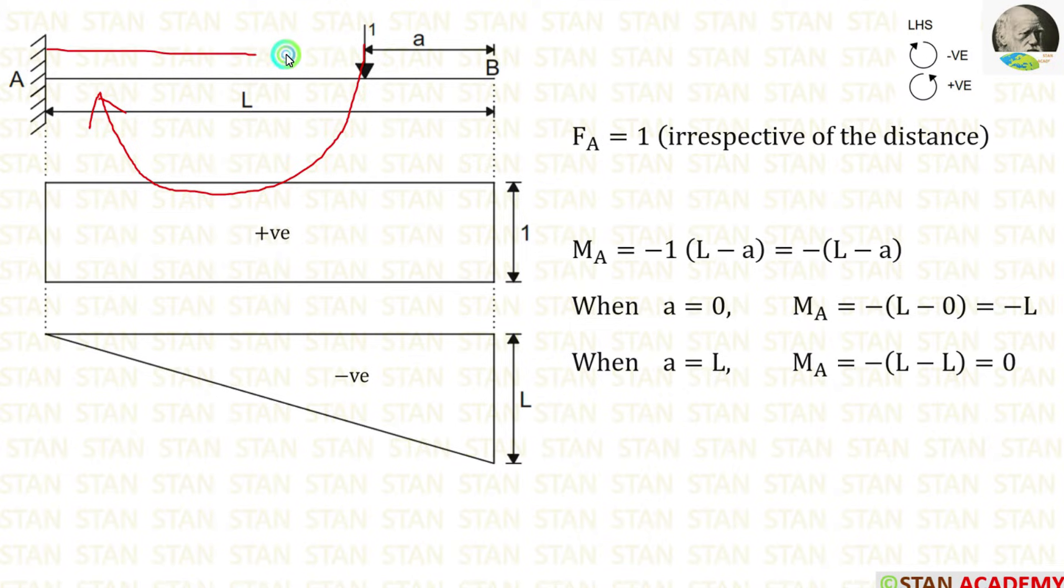For the distance we have to take this distance. This distance is L minus A. So MA is equal to minus 1 into L minus A.